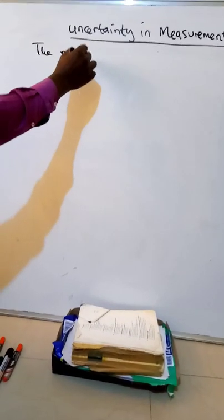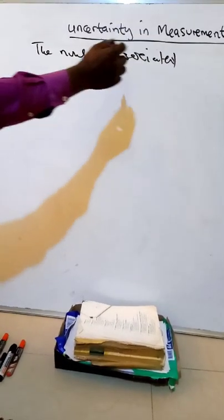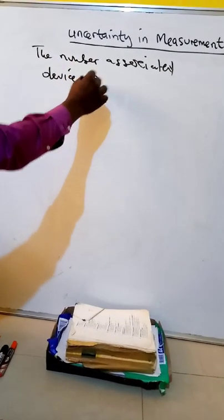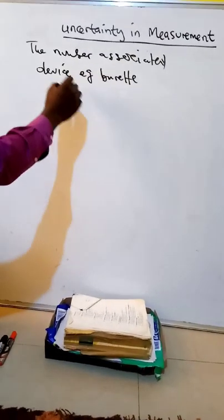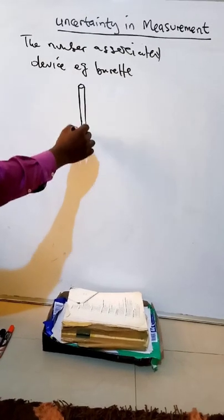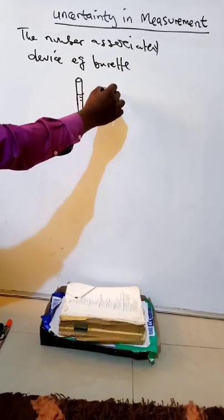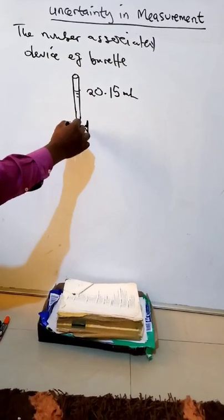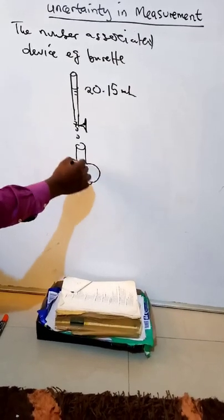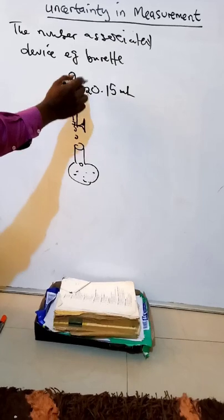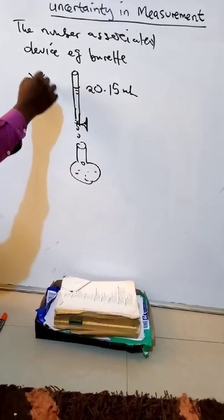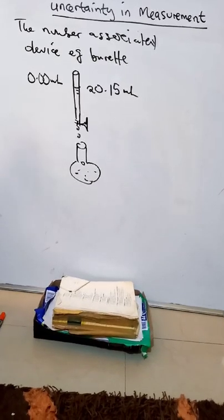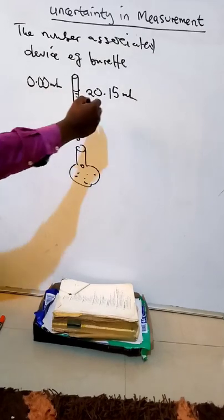The number associated with a measurement is obtained using some measuring device. For example, we can use a burette to measure the volume of a liquid. Suppose 20.15 milliliter is the volume read on this burette. This simply means that 20.15 milliliter of the liquid has been delivered, if the initial volume was at 0.00 milliliter, and we take the volume at the bottom meniscus.